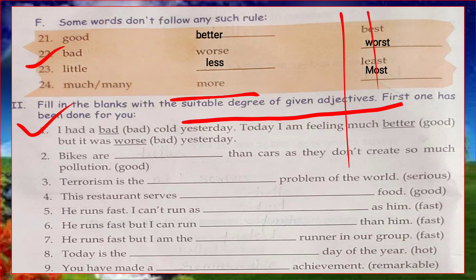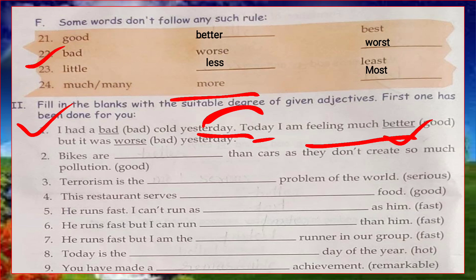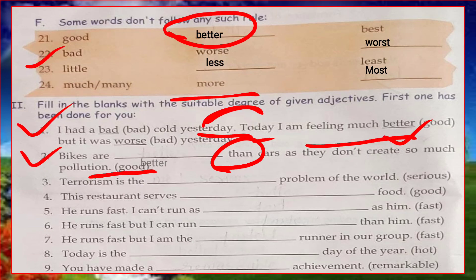Now let's do fill-in-the-blank exercises. The first one is done: 'I had a bad cold yesterday; today I'm feeling better' — comparison between yesterday and today, so we use 'better.' Second: 'Bikes are better than cars as they don't create so much pollution' — comparison made between bikes and cars, so we use 'better,' the comparative of 'good.'